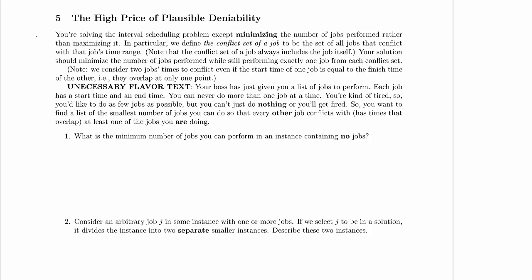So this is 'The High Price of Plausible Deniability.' You're solving the interval scheduling problem except minimizing the number of jobs performed rather than maximizing it. Usually with interval scheduling, we get a bunch of jobs. Each job has a start time and a finish time, or a start time and a duration — both turn out to be the same. And we want to pick as many jobs as possible while ensuring we never pick two jobs that conflict with each other. But now we're minimizing the number of jobs we do.